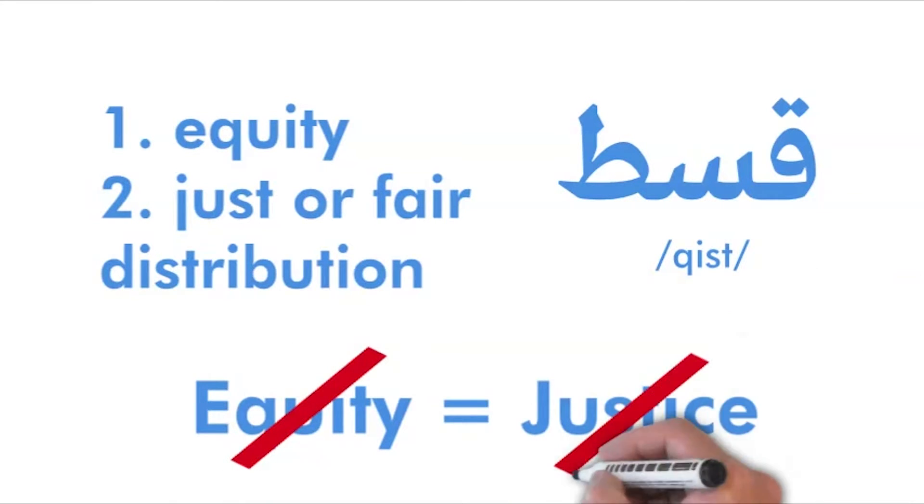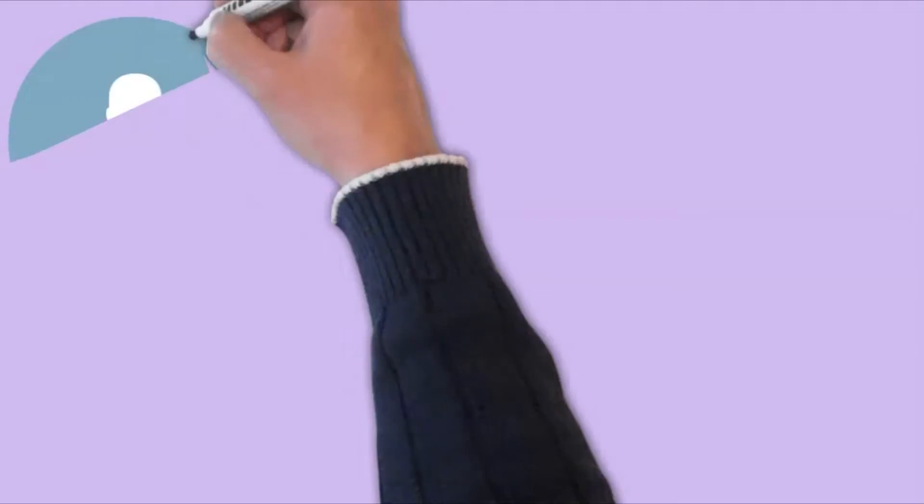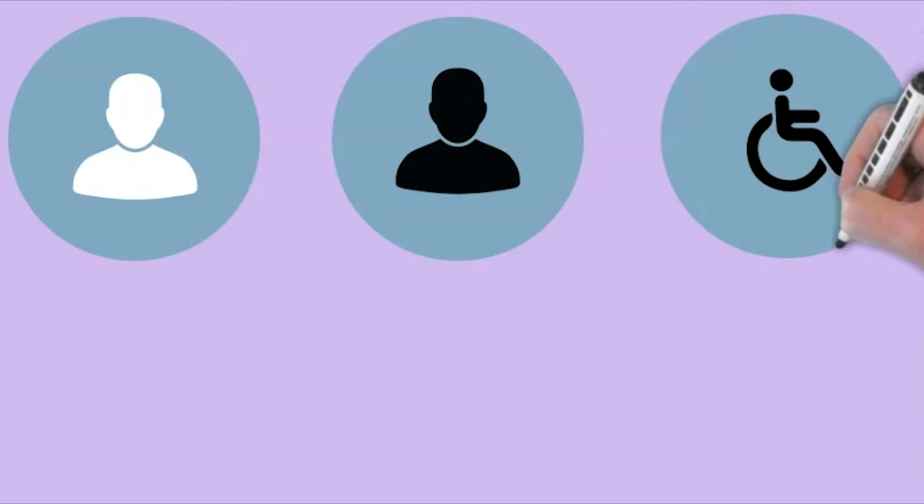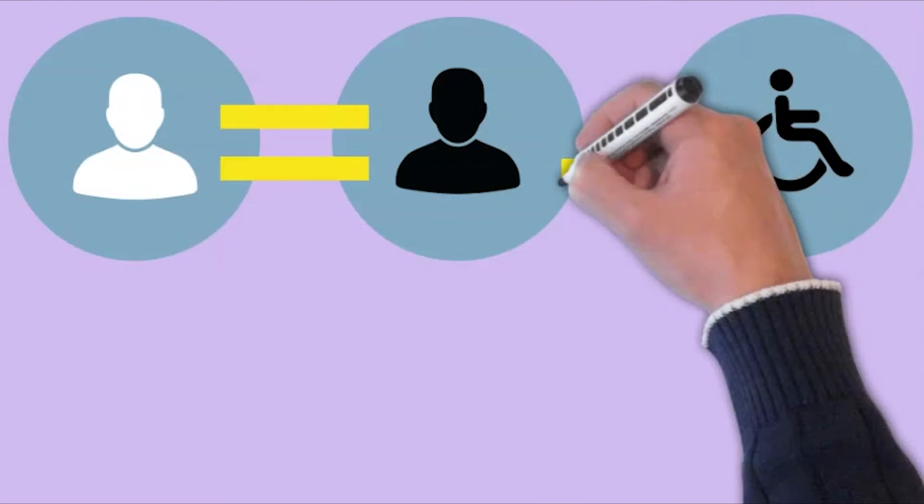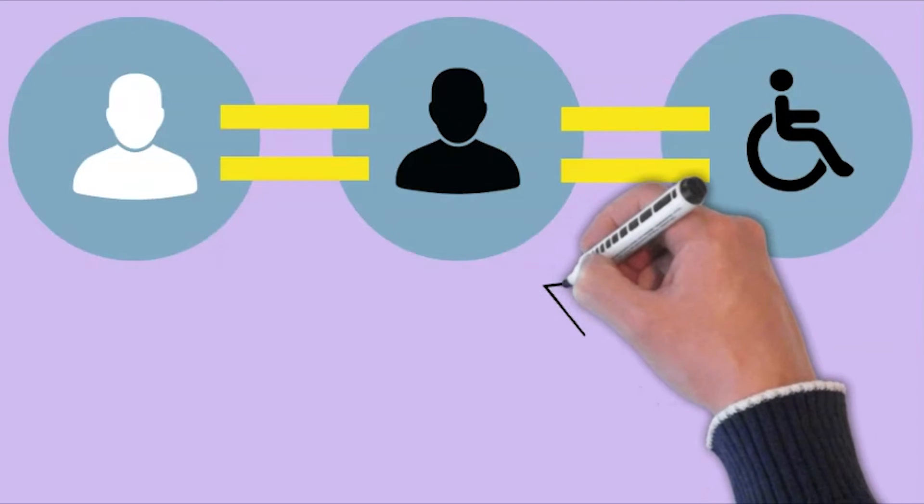Without equity, there can be no justice. Equality discerns everyone as equal despite core differences of privilege and ability. Equity, on the other hand, realizes that every individual is different.